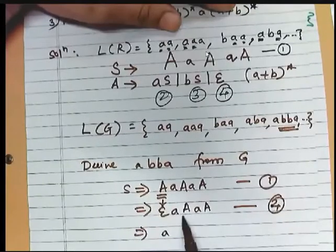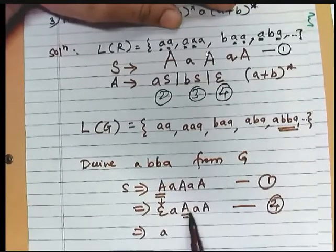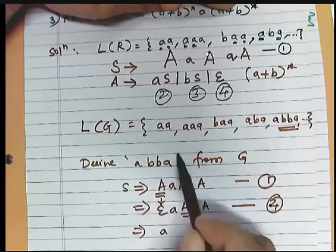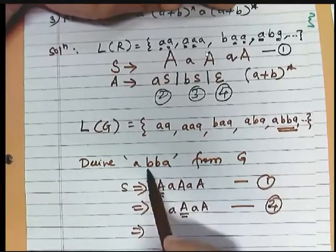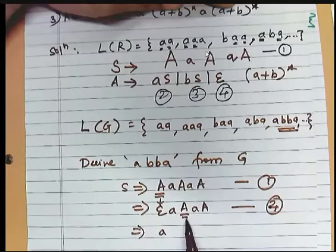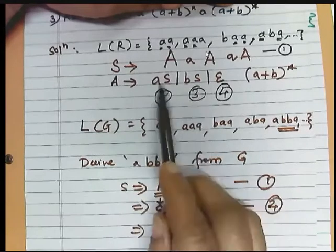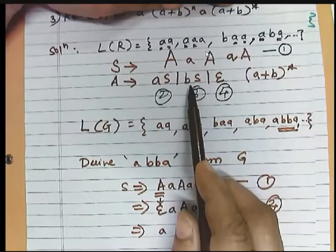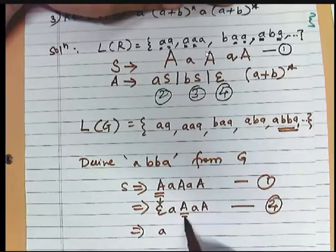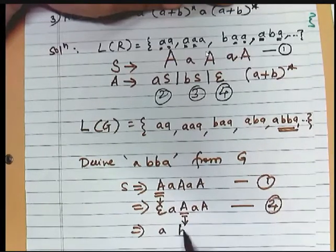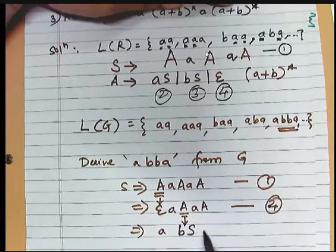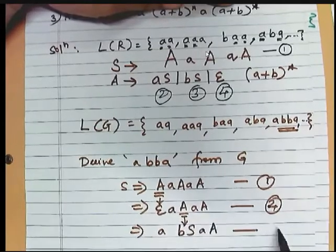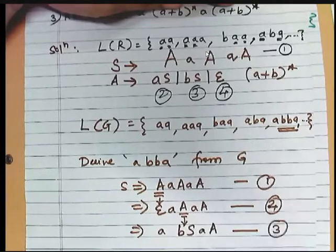Now I need to replace this A. I want B next. If I want B, that means from A I need to choose a rule which generates B as the starting terminal. So I need to replace it with B S — using which rule? Rule 3. Next.